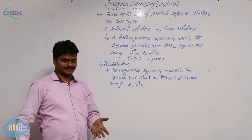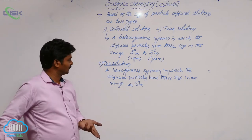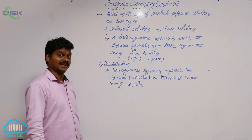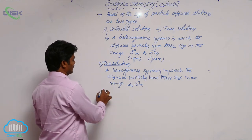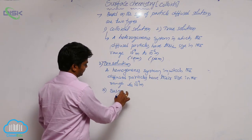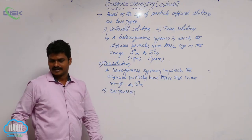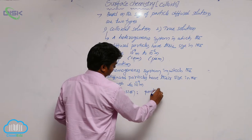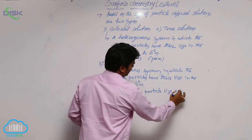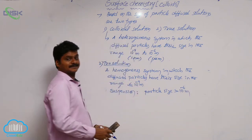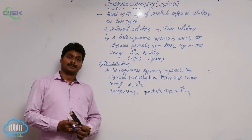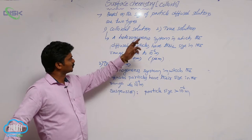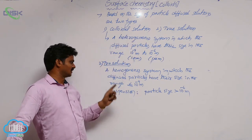There is another heterogeneous system where particle size is greater than 10⁻⁶ meters — that is called suspension. So binary mixtures are of three types: one, true solution; two, colloidal solution; three, suspension. Suspension particle size is greater than 10⁻⁶ meters. Suspension is not named as 'suspension solution' — it is a separate heterogeneous system, a two-phase system where we can distinguish both phases with our naked eyes.